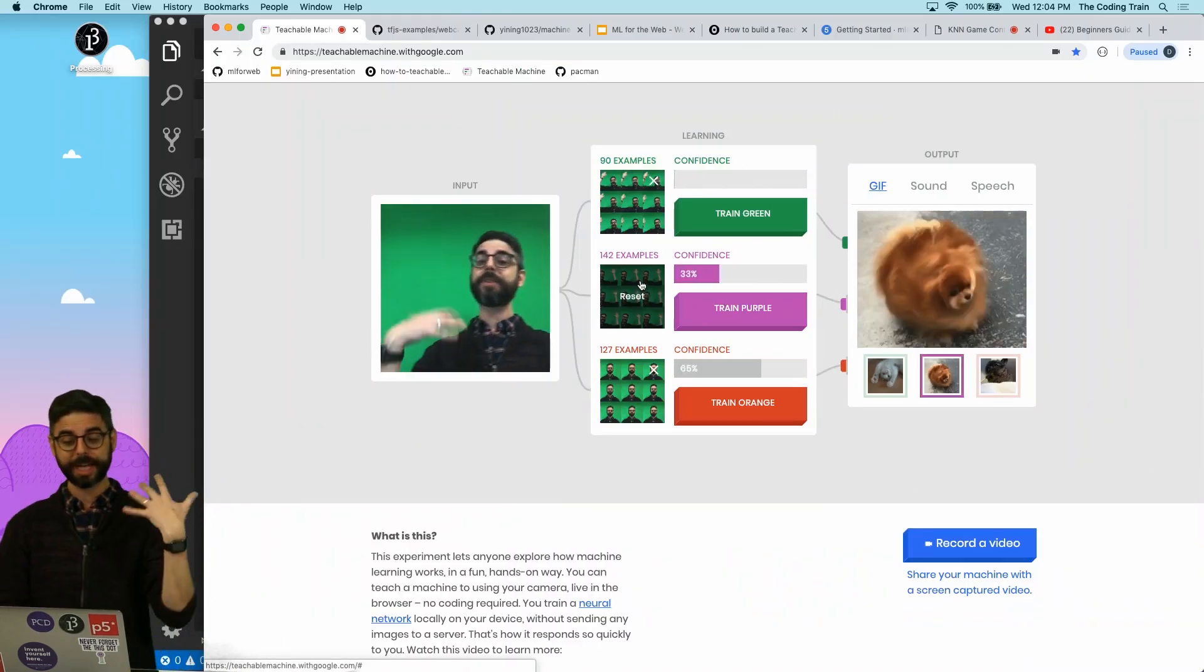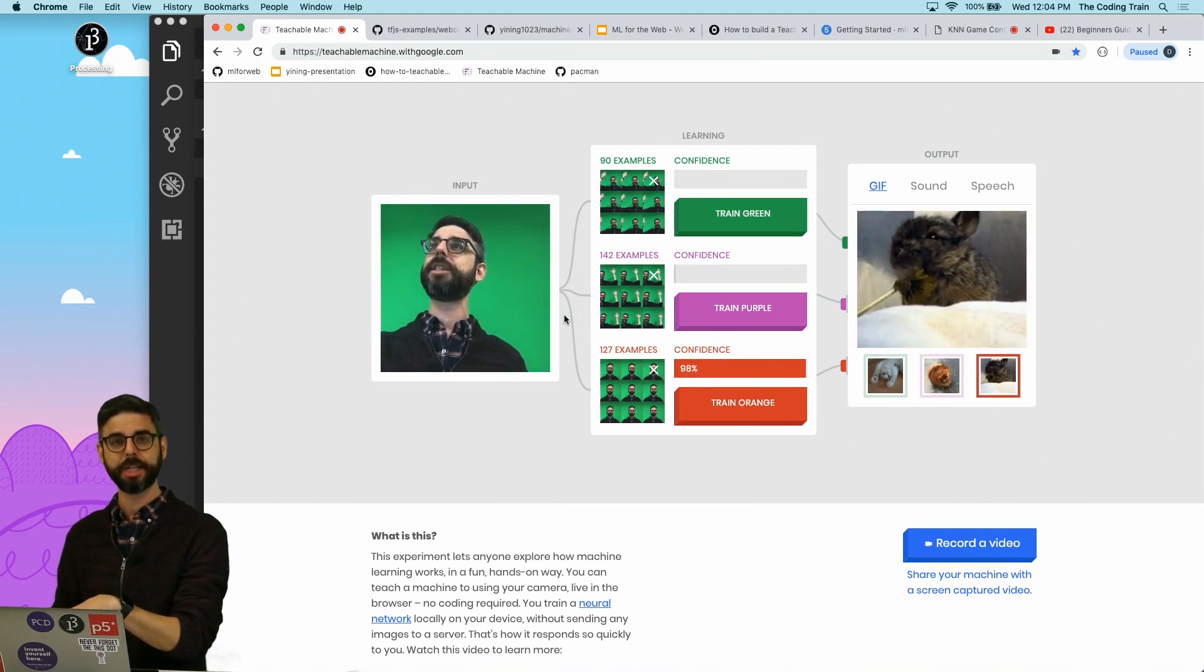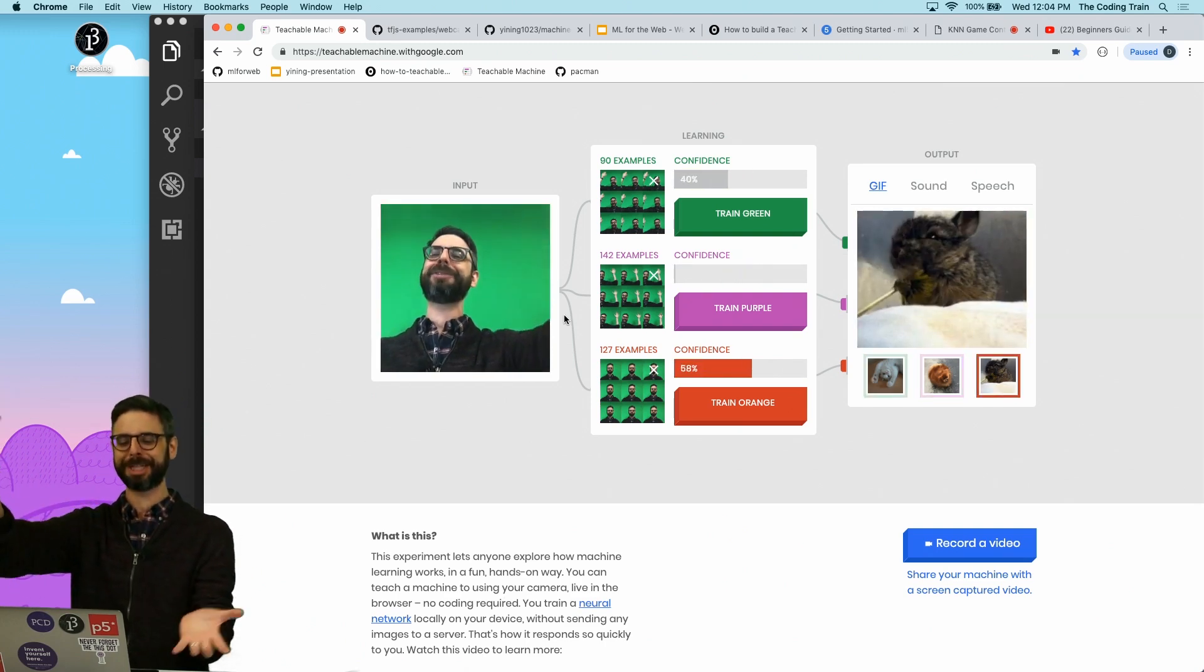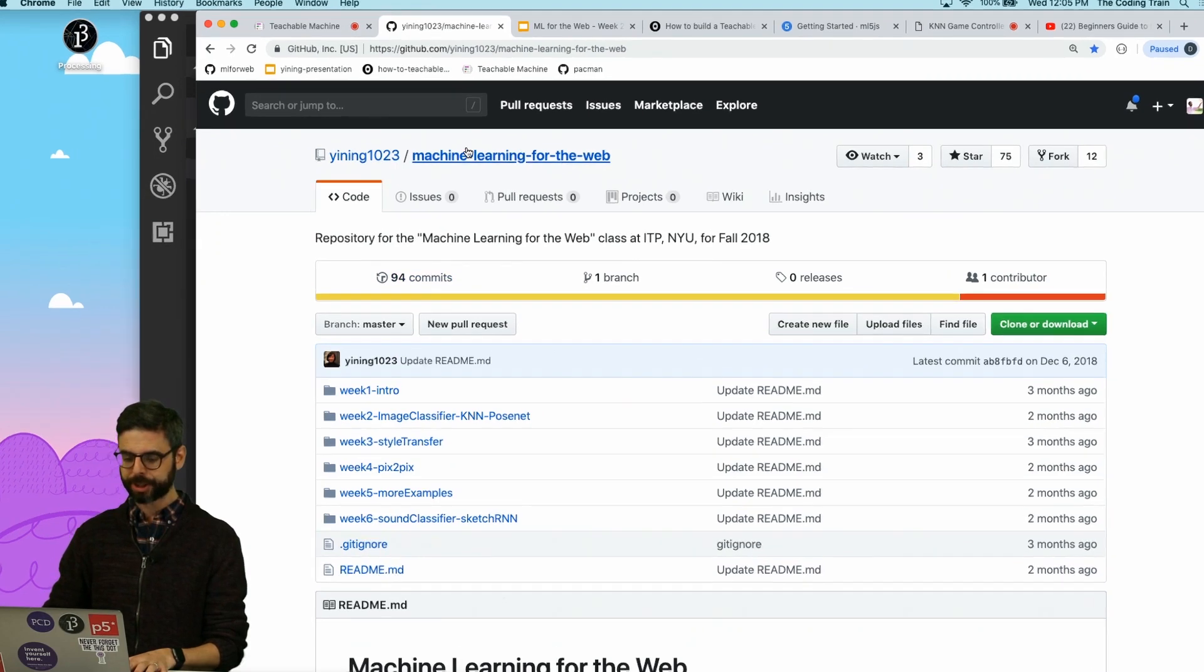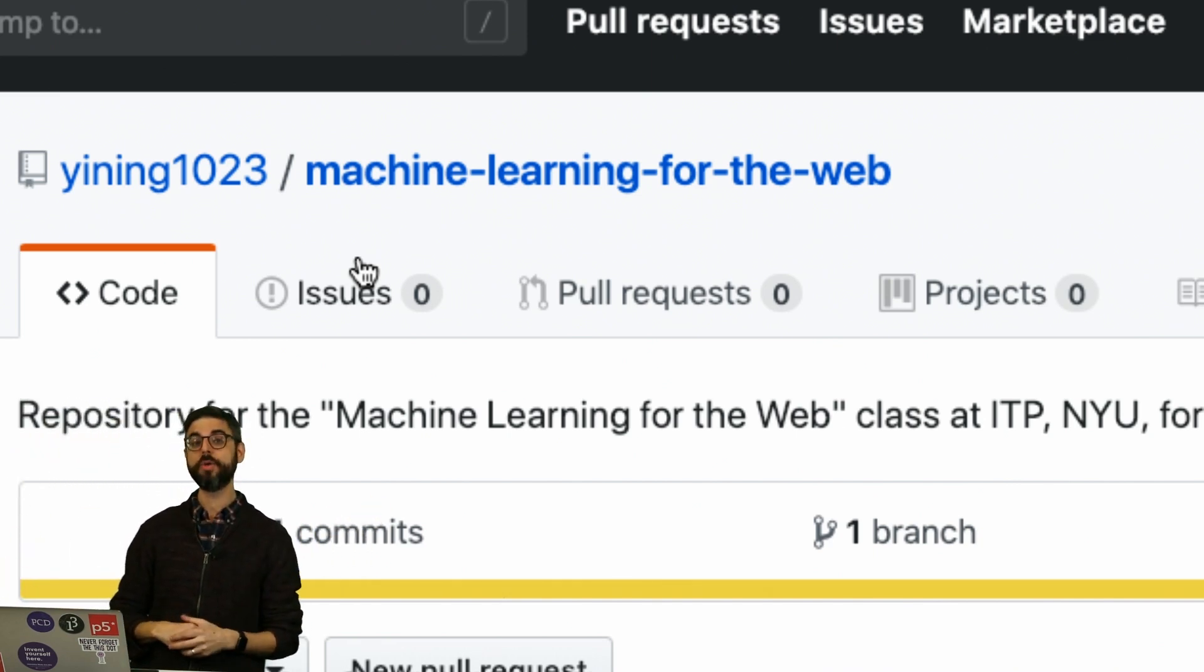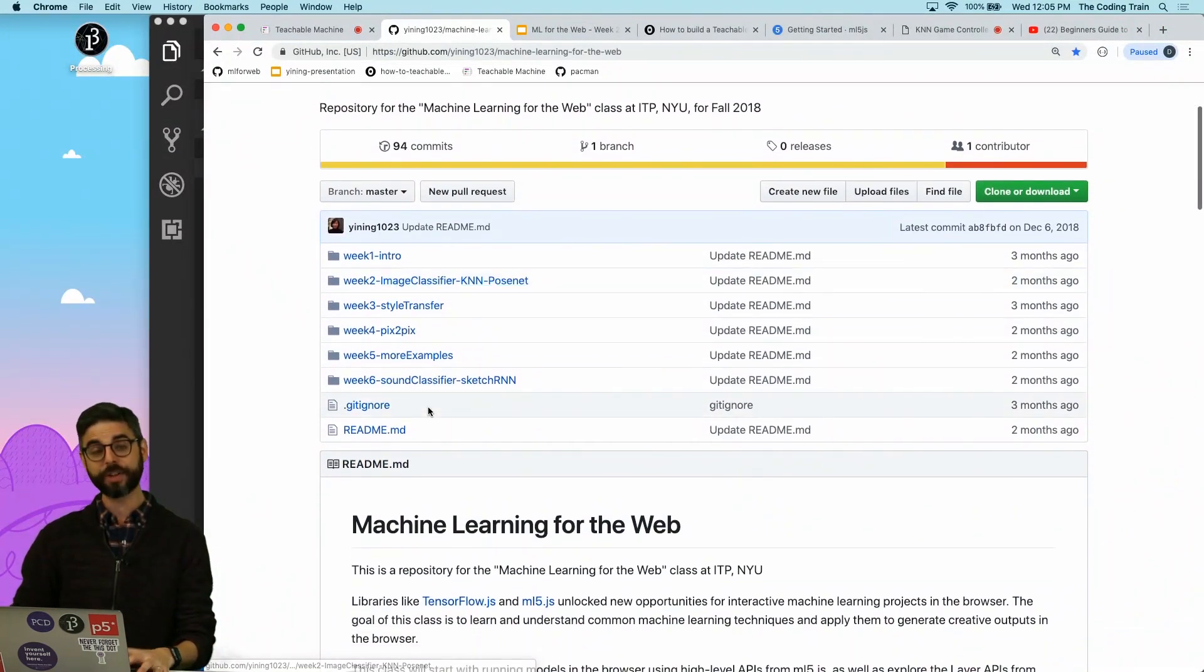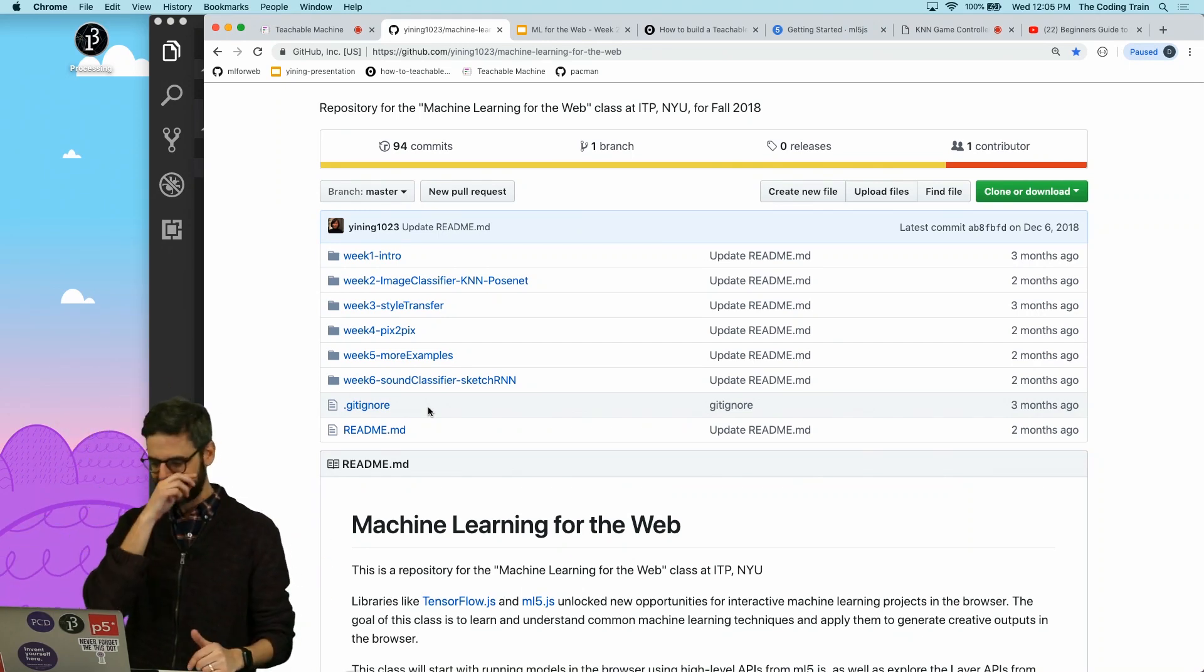You can play around with this website to get a sense, there's a really nice interface. There's an ML5 version of this. This is built with TensorFlow.js. ML5, which is a library built on top of TensorFlow.js, we have a similar version. All this work was done by Yining Shi for ML5.